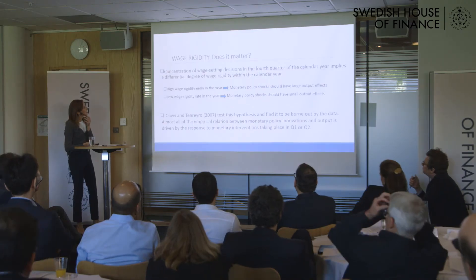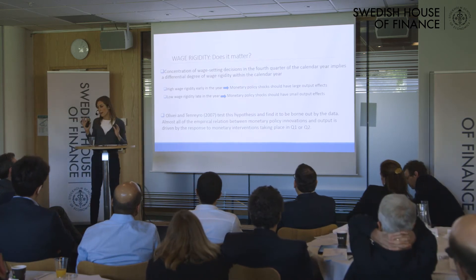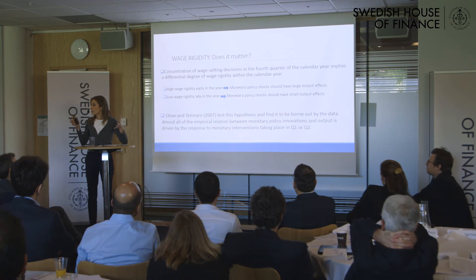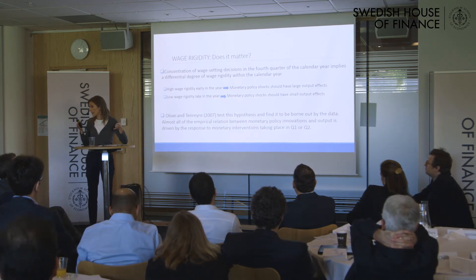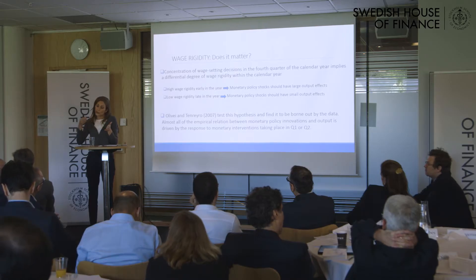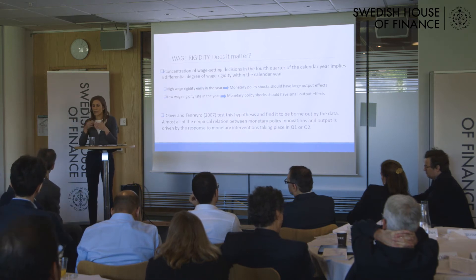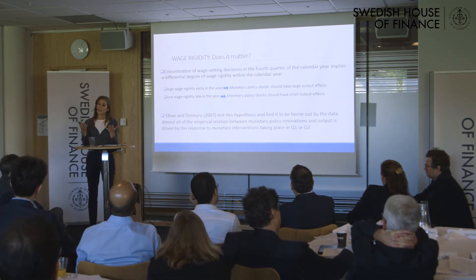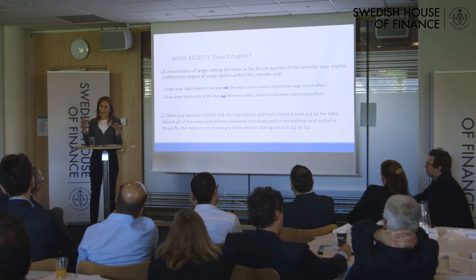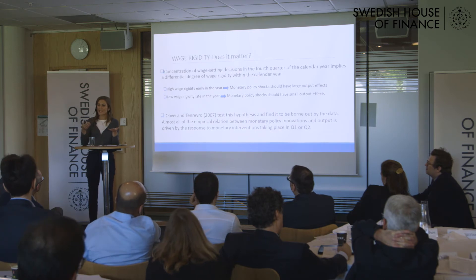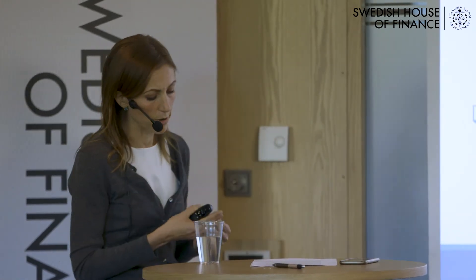There is a big spike in the distribution of wage-setting decisions in the fourth quarter of the calendar year, implying a differential degree of wage rigidity during the year. Early in the year, wages are mostly sticky because they've just been reset, so models of nominal rigidity would predict that monetary policy should have a larger impact on output and employment. Conversely, late in the year wages are mostly flexible — about to be reset — and we should expect to see smaller effects of monetary policy on activity.